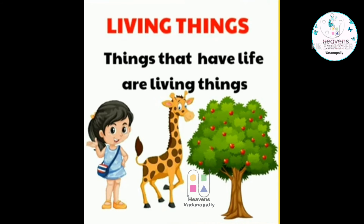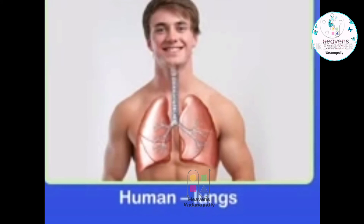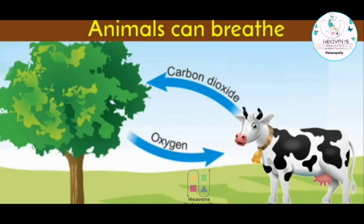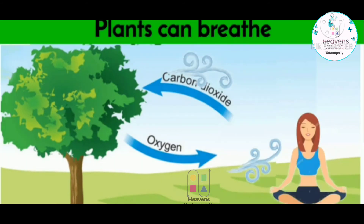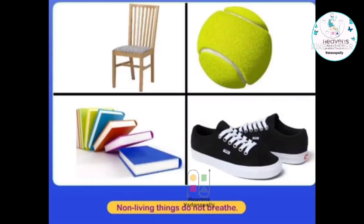All living things breathe. We live because we breathe through our lungs. Like humans, animals also breathe in oxygen and give out carbon dioxide. This carbon dioxide is taken by plants to make food. Fishes breathe through their gills under the water. Non-living things do not breathe.